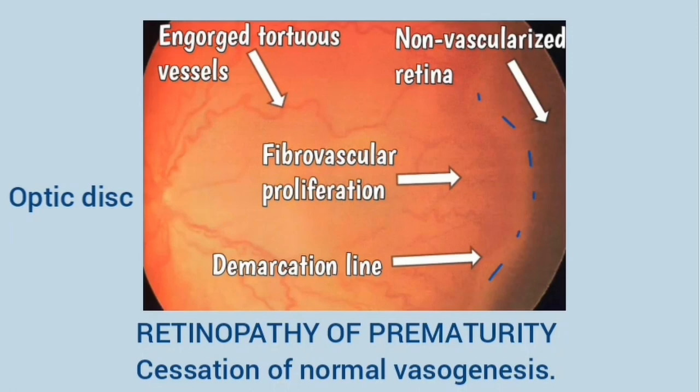This is a fundus image of retinopathy of prematurity, in which there is cessation of normal vasculogenesis. It is characterized by a white demarcation line between vascularized and non-vascularized retina. There is fibrovascular proliferation adjacent to this demarcation line, and in severe cases there are engorged and tortuous blood vessels.